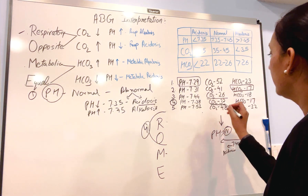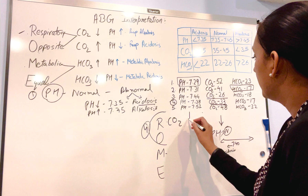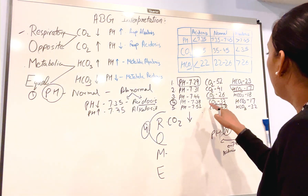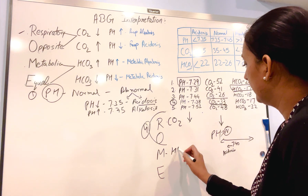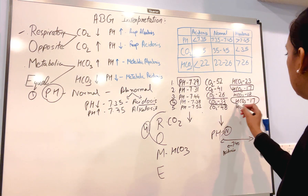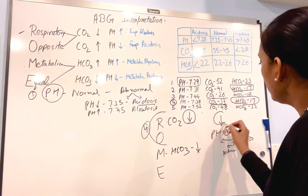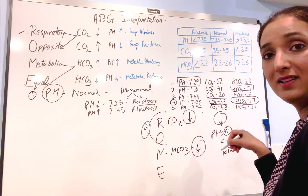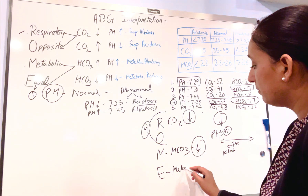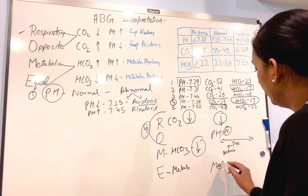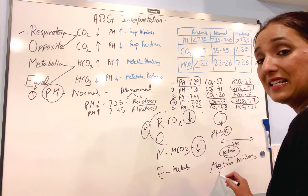Carbon dioxide is 33 — carbon dioxide is also going down. Bicarb is 17 — bicarb is also going down. All are going in the same direction, equal direction. That means it is metabolic acidosis, and from the pH we know it's compensated — so the answer is compensated metabolic acidosis.